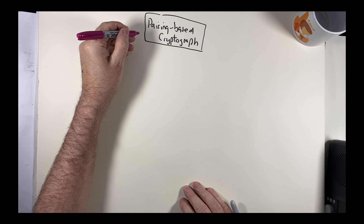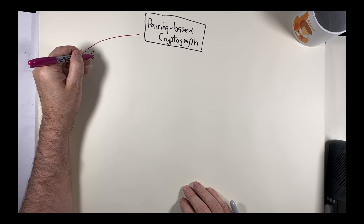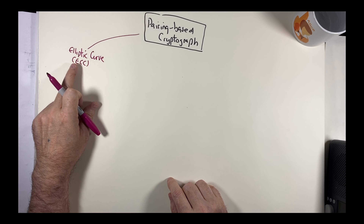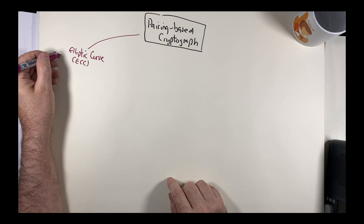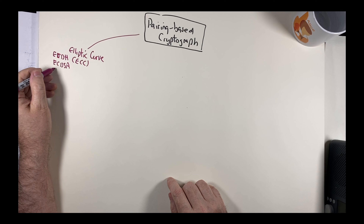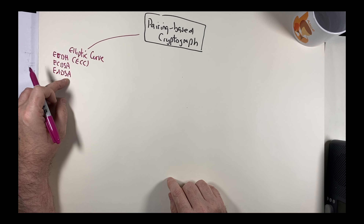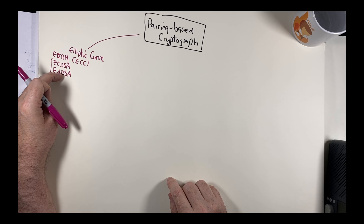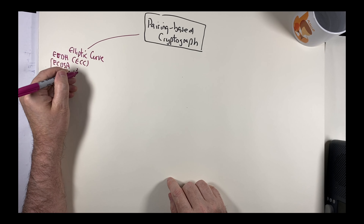We'll start off with the basics of elliptic curves. Elliptic curves are used extensively within the security industry. Elliptic curve cryptography is at the core of methods such as elliptic curve Diffie-Hellman, elliptic curve digital signature algorithm (ECDSA), and EdDSA — a key exchange method and digital signature methods.